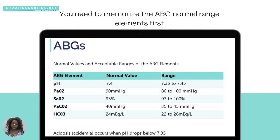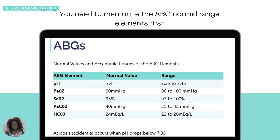One of the reasons people struggle with ABGs is not having a clear foundation on what they need to know. You need to first, at minimum, memorize the normal ranges for pH, CO2, and bicarb. That's the first step — just memorize those normal ranges before you try to interpret anything.